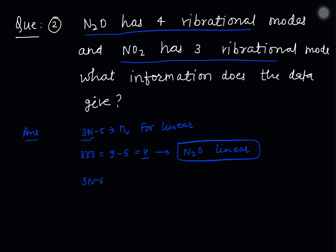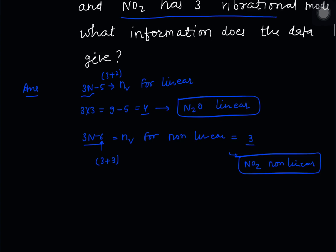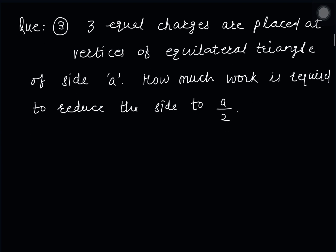For non-linear molecules, the number of vibrational modes is 3N−6. This is because the total number of modes is 3 times the number of particles: 3 translational and 3 rotational for non-linear, versus 3 translational and 2 rotational for linear. For NO₂ with N=3, 3N−6 = 3. So NO₂ is a non-linear molecule.